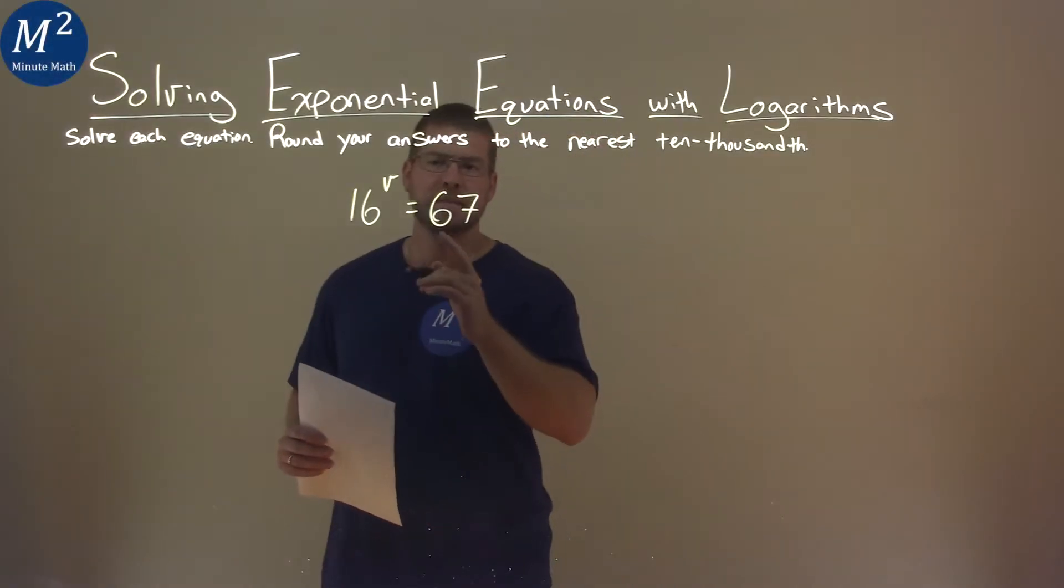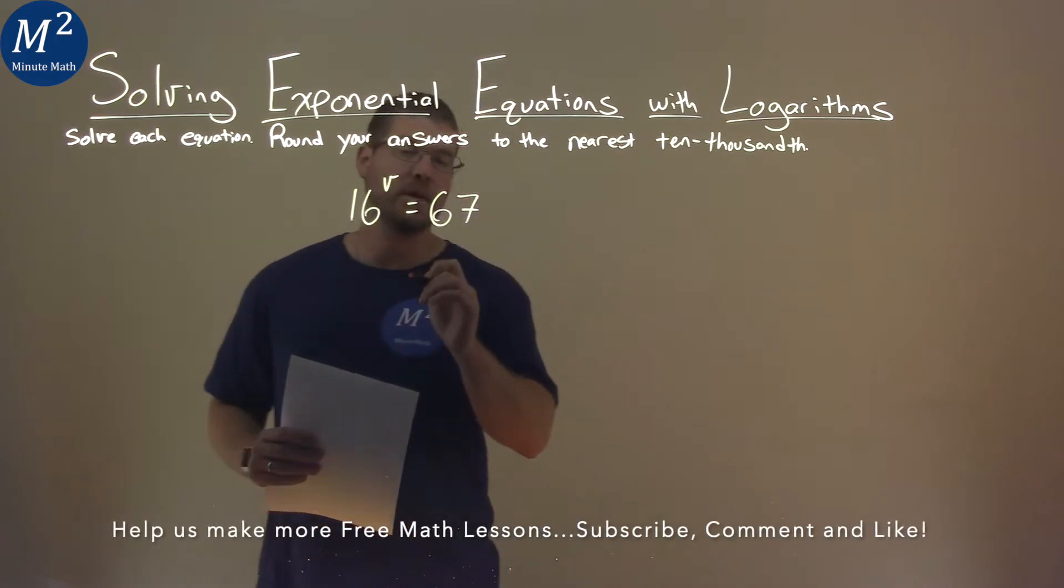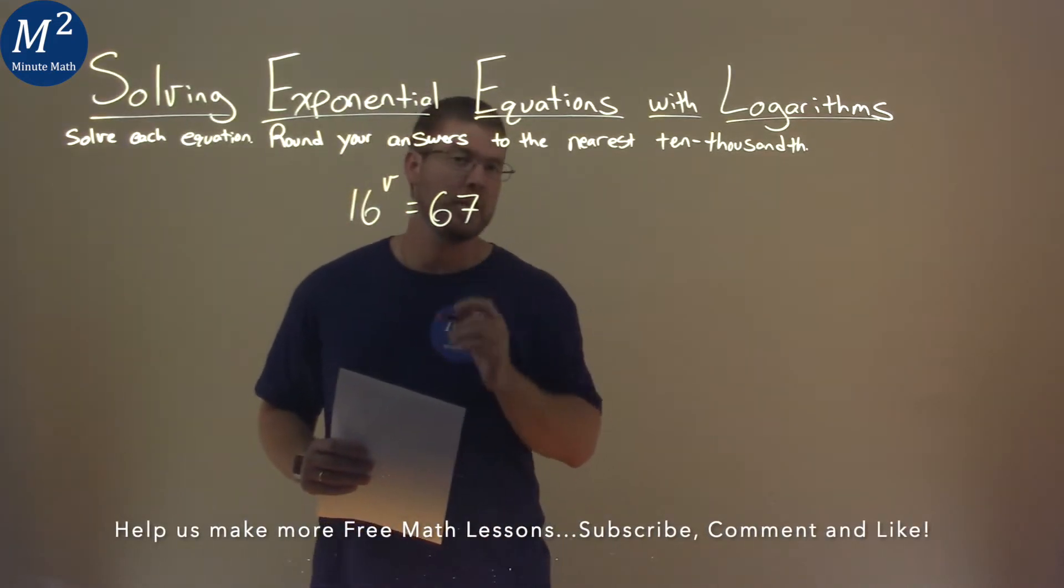We're given this problem right here. 16 to the power of v is equal to 67, and we need to solve this equation.